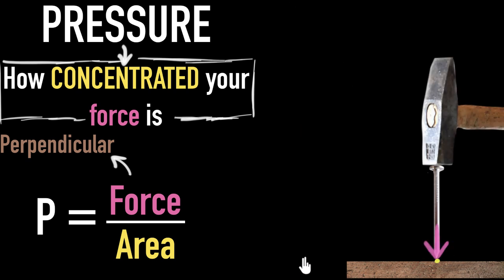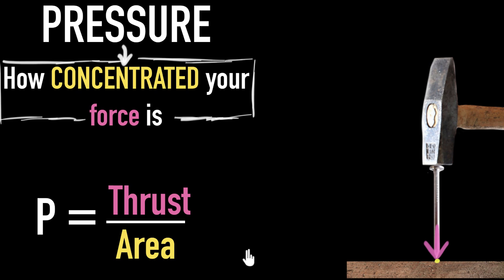And so, pressure only makes sense when you're applying force perpendicular to that area, perpendicular to that surface, okay? And your textbooks give a name to this perpendicular force. I don't know why, but whenever the force is perpendicular to the surface, your textbooks give a name to it, and it's often called thrust.